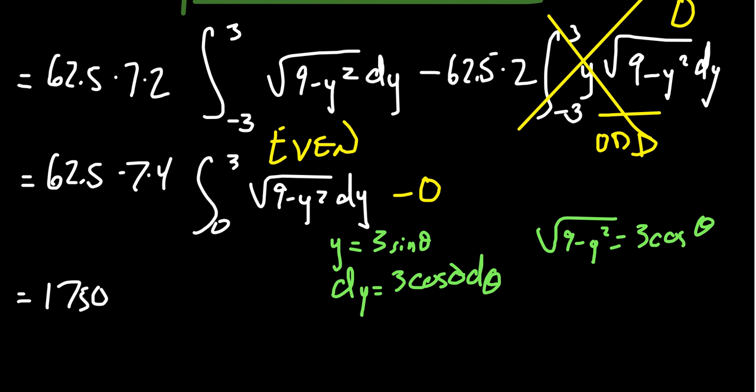If you make that substitution, you'll get the integral of 9 cosine squared theta d theta. The square root becomes 3 cosine, and the dy also becomes 3 cosine. If you switch the bounds, when y equals 0, that means sine will have to equal 0, which is 0. When y equals 3, you get sine equals 1, which happens at pi halves.